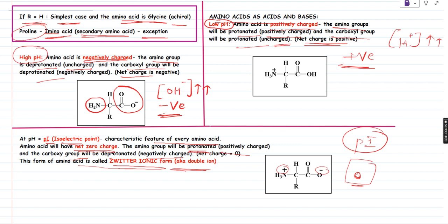This zwitterionic form of a given amino acid takes place at a particular pH called the isoelectric point, commonly denoted by pI. I am stressing on this isoelectric point because in certain GATE papers I have seen direct questions asking about the isoelectric point of arginine or lysine etc. If you can remember the isoelectric point of the 20 standard amino acids, it is going to be a cakewalk for such questions. This isoelectric point is also used as a principle to separate proteins in a technique called IEF — isoelectric focusing — which I will discuss in further video series.